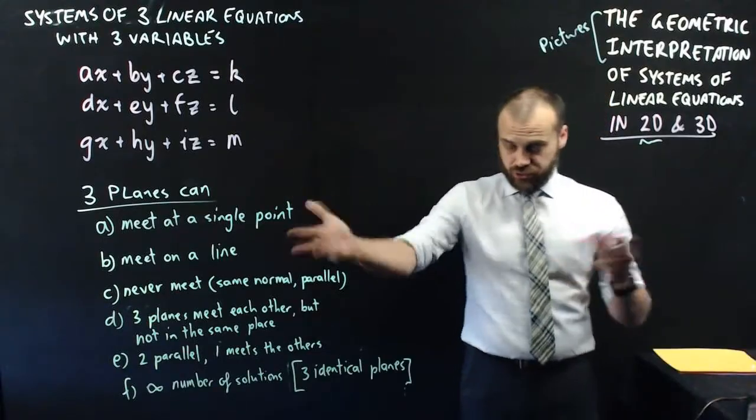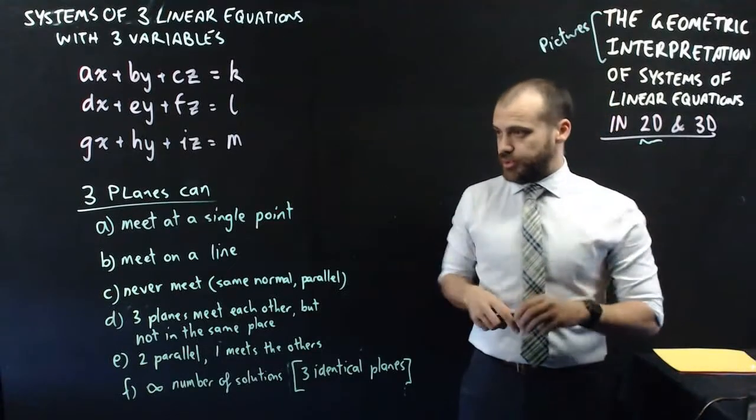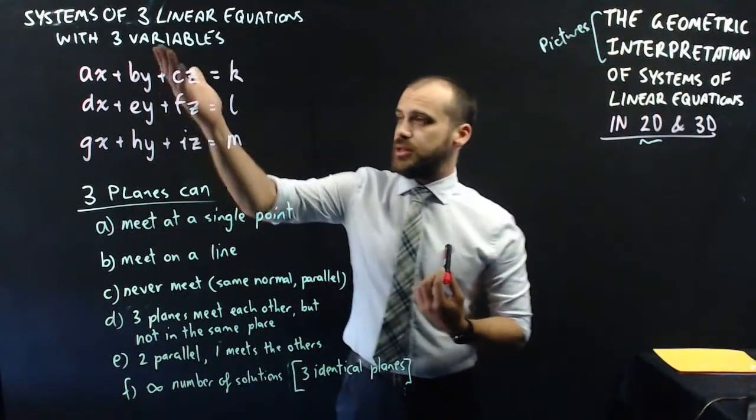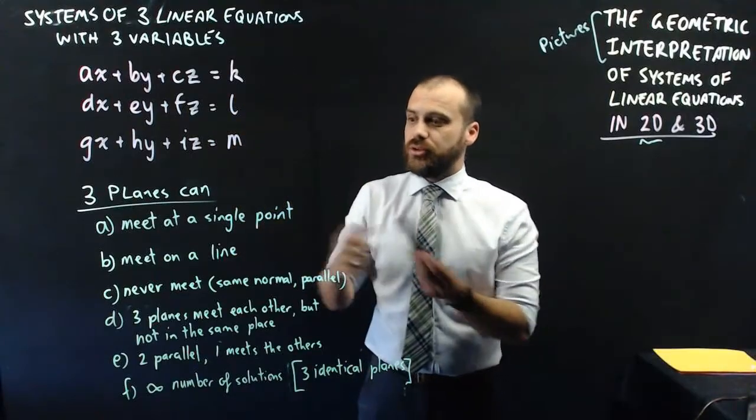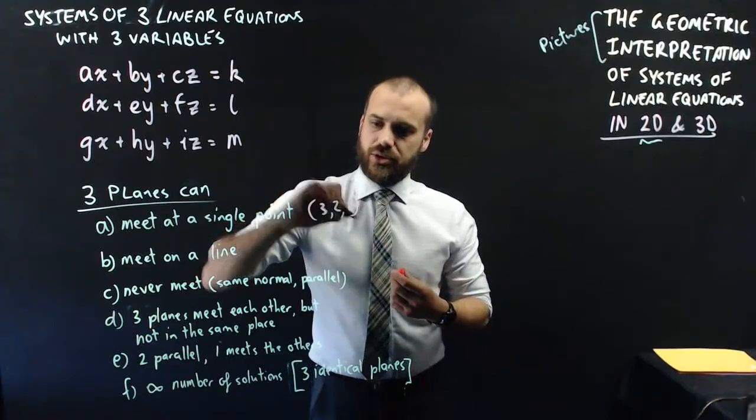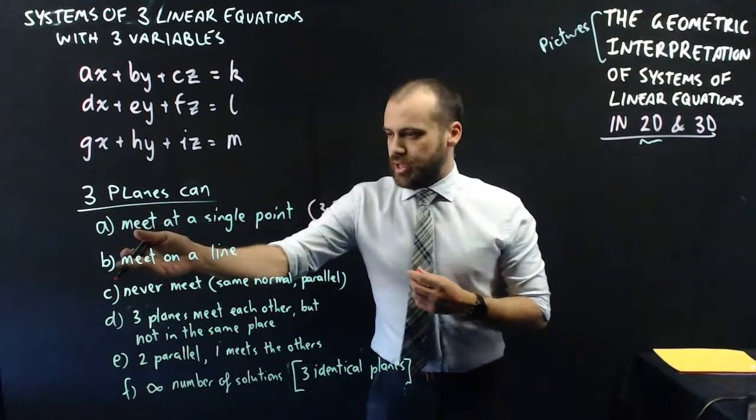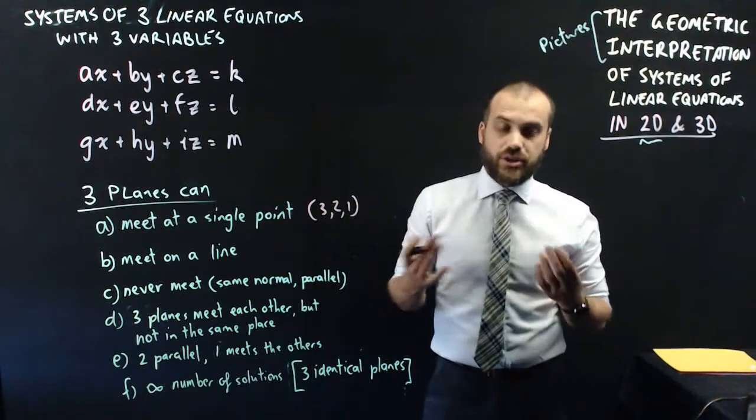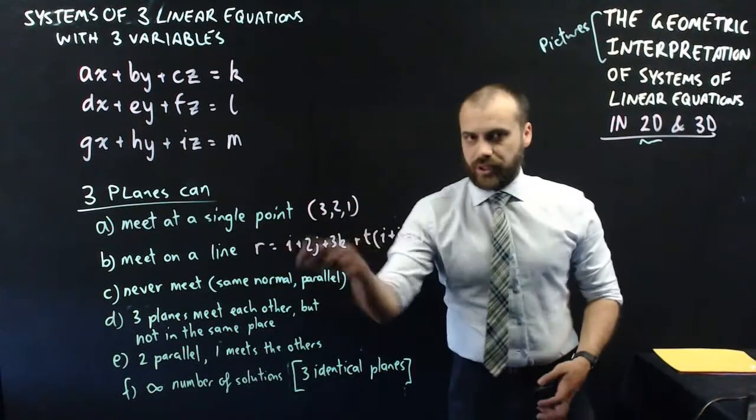Now you can do your best to draw these in your notes. Good luck with that. Now, the three planes can meet at a single point. That means this is going to have a single solution, a single point. It'll say the point that they meet at is (3, 2, 1). It might say they meet on a line, in which case they'll give you the equation of a line.